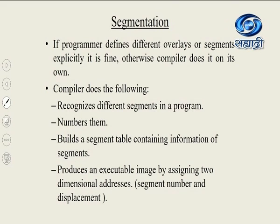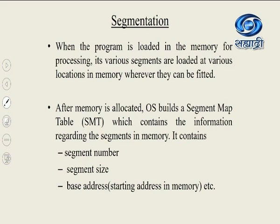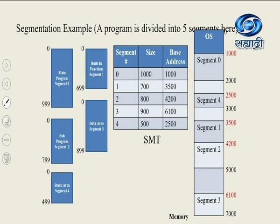The compiler recognizes different segments in a program, numbers them, builds a segment table containing information of segments, then produces an executable image by assigning two-dimensional addresses. This address contains a segment number and displacement. When the program is loaded in memory for processing, its various segments are loaded at various locations in memory where they can be fitted. After memory is allocated, the OS builds a segment map table — SMT — which contains segment number, segment size and base address, that is the starting address of the segment in memory.